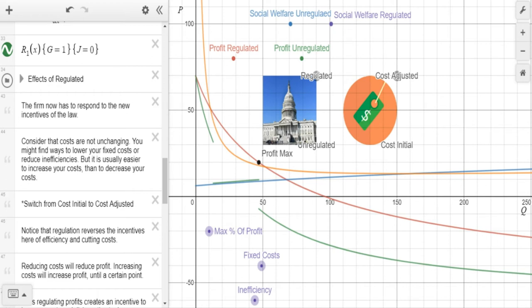We've noticed that by increasing our fixed costs and our inefficiency, the profit while regulated went up a bit, and the profit of being unregulated went down quite a lot. Normally when you increase your costs and be more inefficient in producing something, it causes a reduction in profit. But here, your profit is based on the amount of costs you incur, so it actually increases your profit.